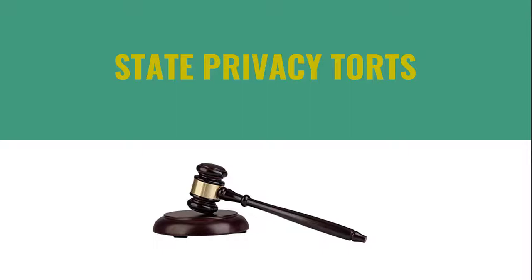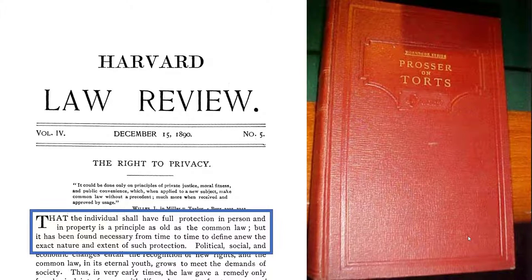All 50 states have recognized some types of privacy harms that support a tort claim. The original idea for this comes from an 1890 Harvard Law Review article by Samuel Warren and Louis Brandeis — Brandeis would later sit on the Supreme Court. Appalled by the rise of mass circulation newspapers and gossip sheets aided by the newfangled camera, they argued that the common law needed to develop an enforceable privacy right based on "the right to be let alone." Seventy years later, a legal scholar named William Prosser wrote a law review article that organized privacy concerns and harms into four distinct invasion of privacy tort claims.